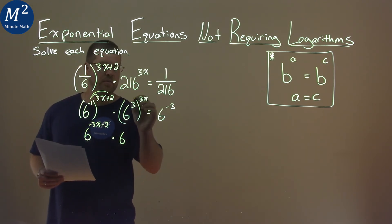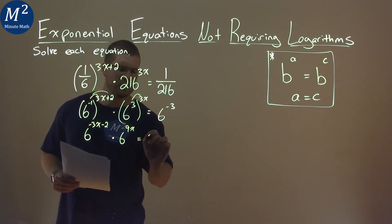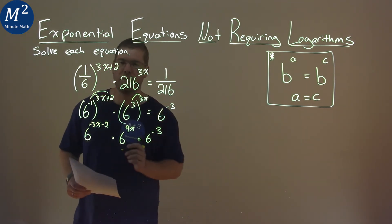Same thing here, 6 to the 3 times 3x is 9x, and that's equal to 6 to the negative 3rd power.